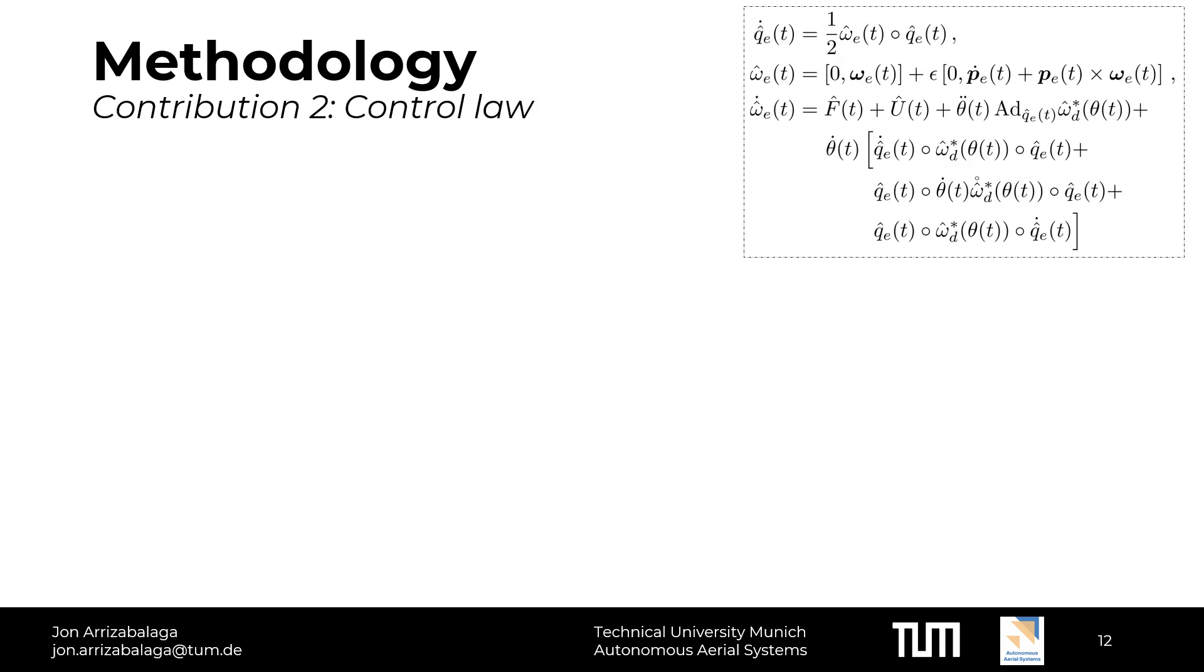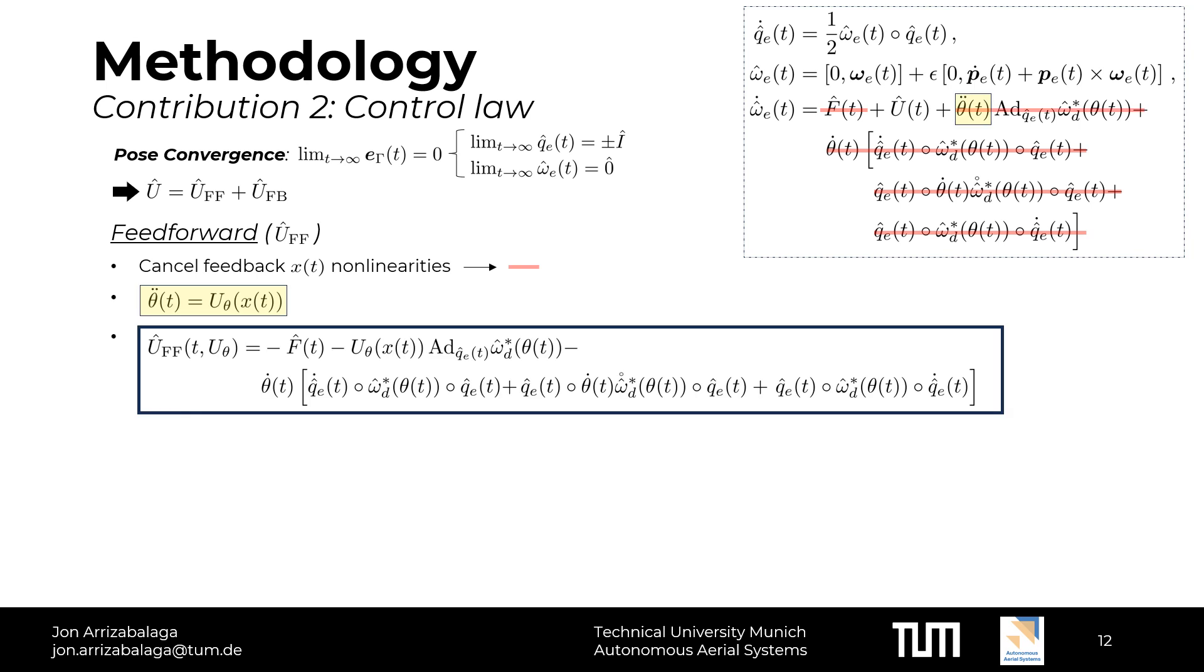Before formulating the control law, we need to take a step back and bring up the definition of pose-convergence. This is equivalent to ensuring that the dual-quaternion error converges to the equilibrium points of the error dynamics. Taking this into account, we proceed to formulate a control law that regulates the stable equilibrium point. To do so, we decouple the control law into a feedforward and feedback term. The goal of the feedforward term is to cancel feedback nonlinearities. When doing so, it is apparent that the first and the last term can readily be cancelled out. However, this is not true for the third term, which is multiplied by a virtual input. To account for this, we choose the virtual input to be feedback-dependent, allowing us to also get rid of it with the feedforward component.